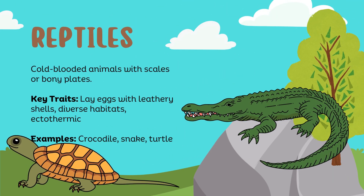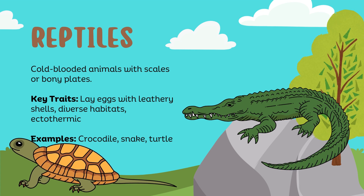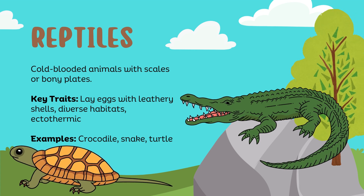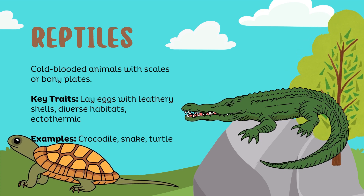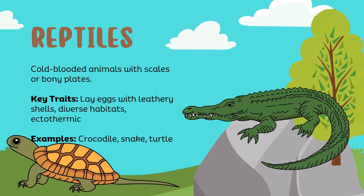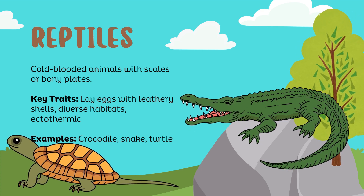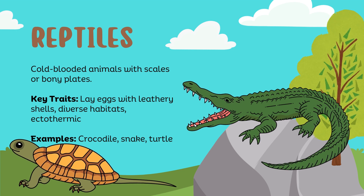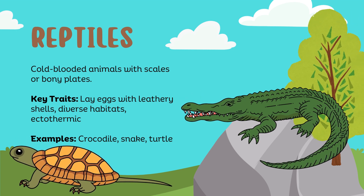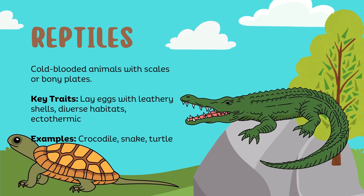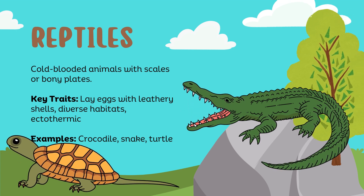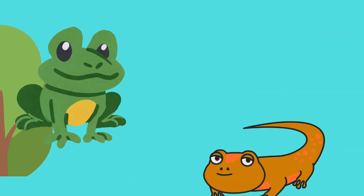Reptiles: cold-blooded animals with scales or bony plates. Key traits: lay eggs with leathery shells, diverse habitats, ectothermic. Examples: crocodile, snake, turtle.